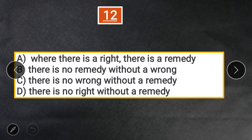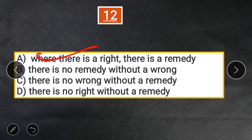Question 12: The legal maxim 'Ubi jus, ibi remedium' means — A. Where there is a right, there is a remedy. B. There is no remedy without a wrong. C. There is no wrong without a remedy. D. There is no right without a remedy. The answer is A — where there is a right, there is a remedy.